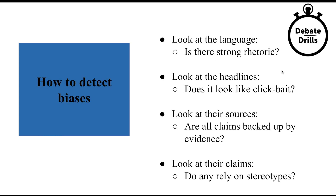How can you detect biases? One thing you should do is look at the language. Is there particularly strong rhetoric? If there is and the writer seems really passionate about the matter, it's likely that the person has a strong stance on it due to political bias or other types of bias. Again, it's not entirely a bad thing, but it is an indicator that some bias is probably at play.